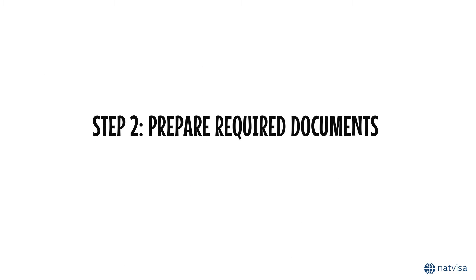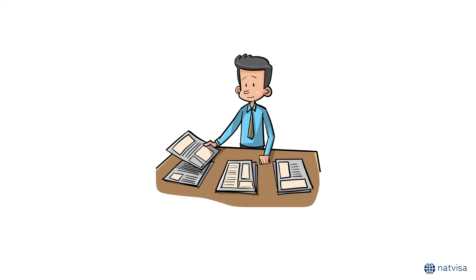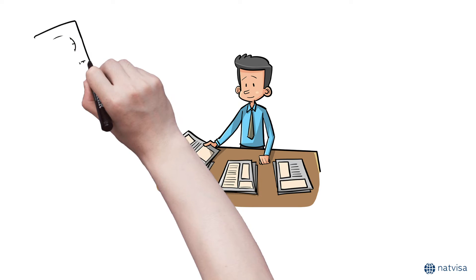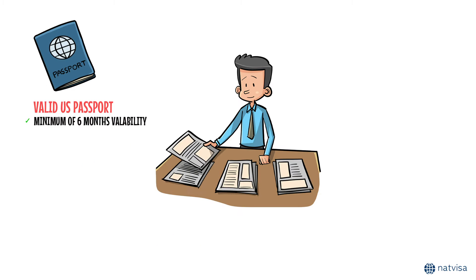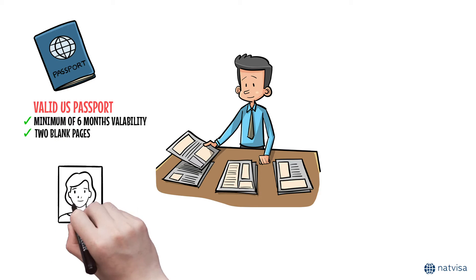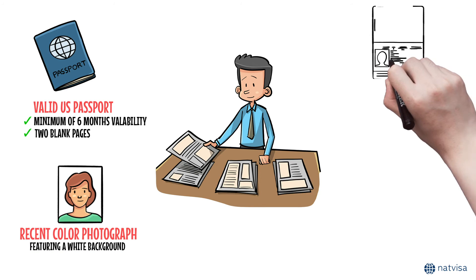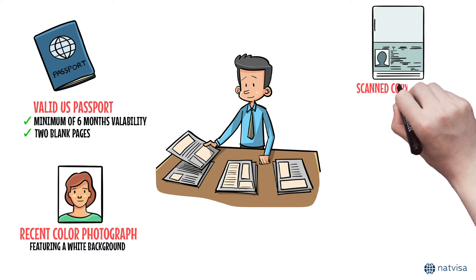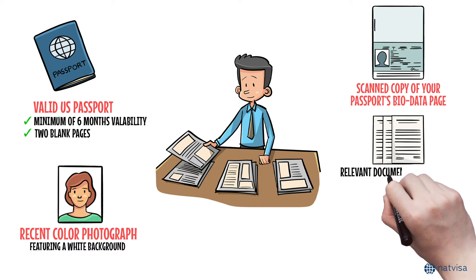Step 2: Prepare required documents. Prior to applying for your India e-visa, it's crucial to assemble the required documents to facilitate a seamless application process. First, ensure you have a valid U.S. passport that has a minimum of six months' validity and two blank pages. Then, get ready with a recent color photograph featuring a white background. Furthermore, you should have a scanned copy of your passport's bio data page available for submission.